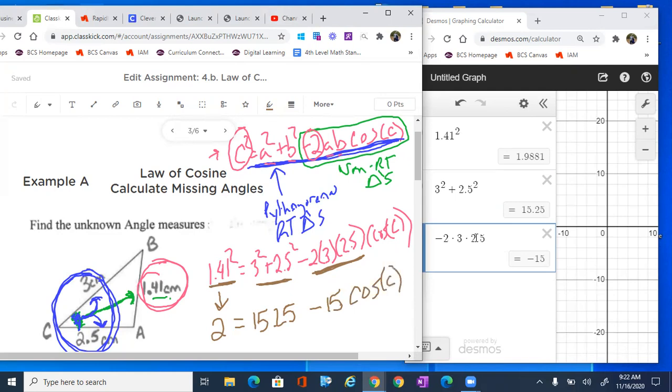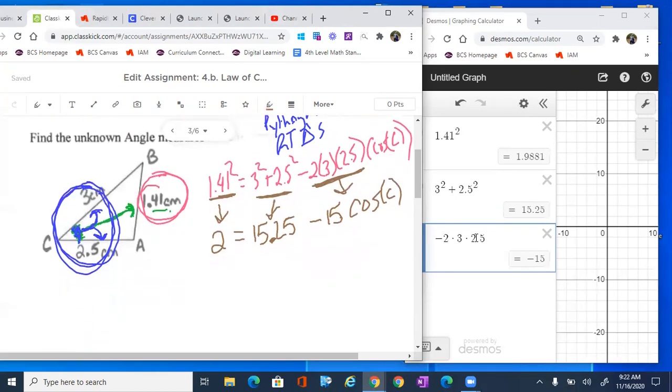So negative 15 times cosine of C. So note, we broke all those pieces into three individual calculations. Now at this point, we just solve it like it's a regular algebra problem. I'm gonna subtract that 15.25.